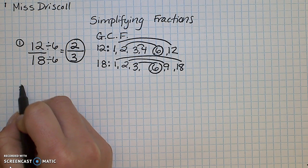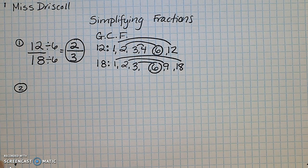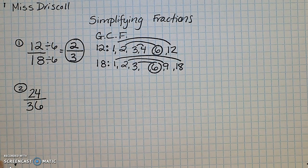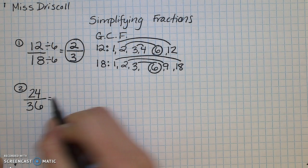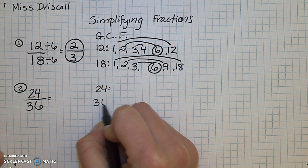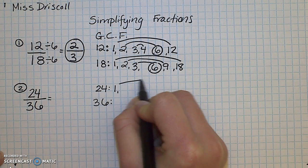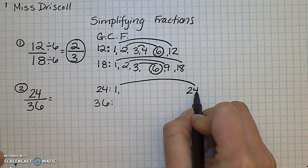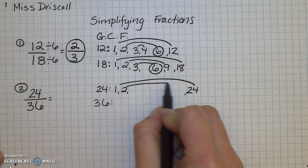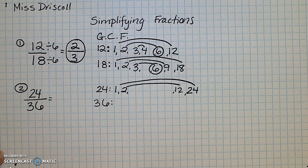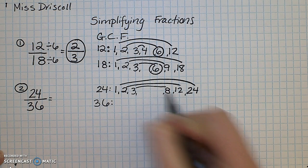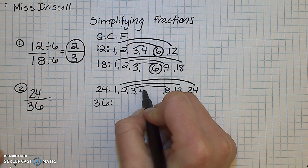Okay, let's try another one. The next fraction we are going to do is 24/36. All right, so let's find our GCF of 24 and 36. Remember our freebies: 1 and the number itself. I'm going to use a lot of space because 24 has quite a few factors. Can 2 go into it? Yes, it's an even number: 2 times 12. Can 3 go into 24? Yes, 3 times 8. Can 4 go into 24? Yes, 4 times 6.